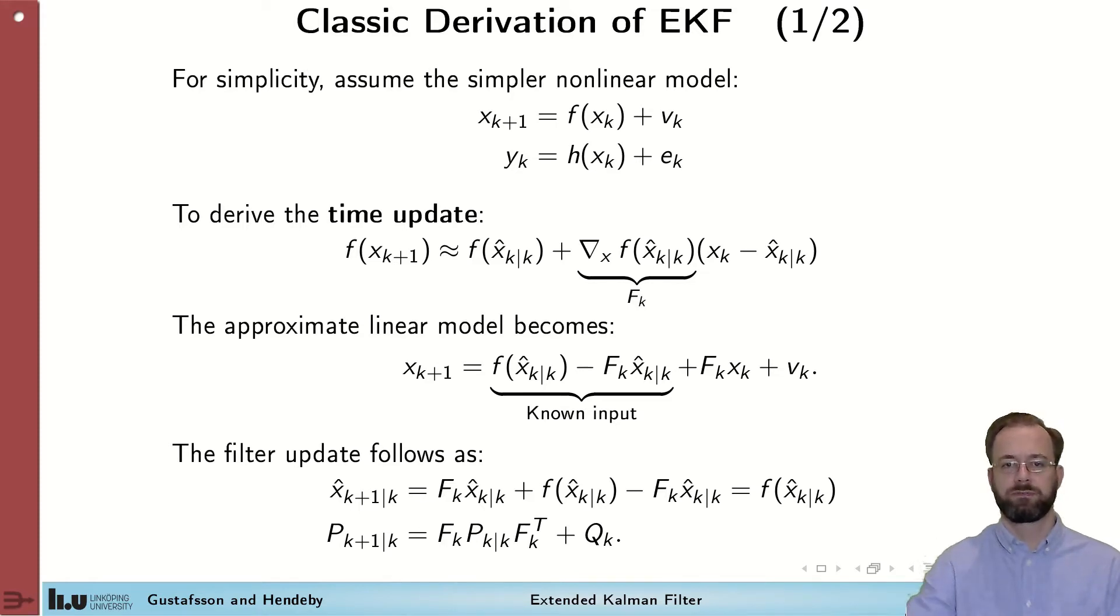That gives us an expression for f, that is a constant term, that we put in the linearization point in f, the derivative of f times the difference between x and this linearization point. Next, we insert this linearized function into the dynamic model, in which case we get this. We have reordered the term slightly to highlight that these parts are known beforehand. We assume that x hat k given k is known, and that we have a normal linear function of x and process noise here. This is the known input to the Kalman filter, which we can compensate for.